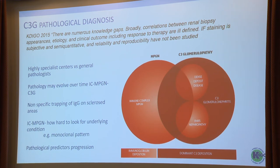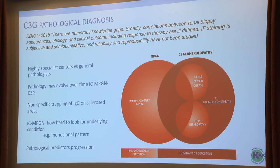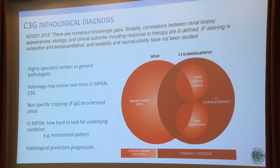C3G. We have lots of fancy complement tests, autoimmune tests, and genetic tests. But none of them are required or particularly helpful in making the diagnosis of C3G — it is a pathological diagnosis. There's lots of argument about C3G and immune complex MPGN. One issue is that pathologists in highly specialist centres are more likely to identify the cause of most immune complex MPGN. There is trapping of immunoglobulin in sclerosed areas, and some cases that look like immune complex MPGN on first biopsy will be C3G on repeat biopsy.